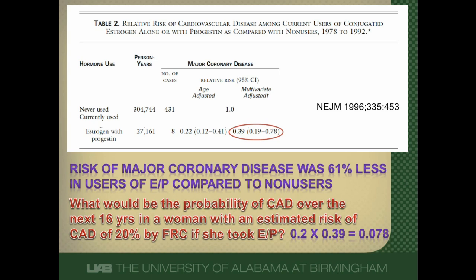Take the patient's baseline risk — best estimated using a prediction rule like the Framingham risk calculator — and multiply it by the risk found in the study to get the patient's final risk. That is clinically how we use this information.